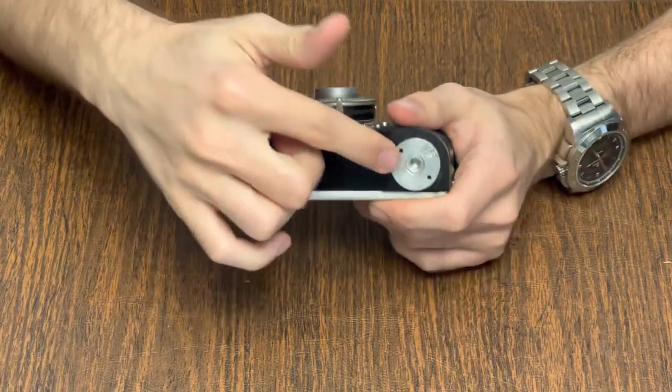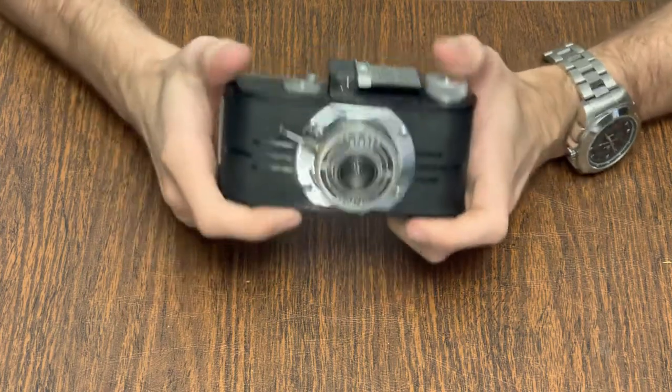Lastly, there is a tripod socket on the bottom of the camera for standard quarter 20 tripod mounts.